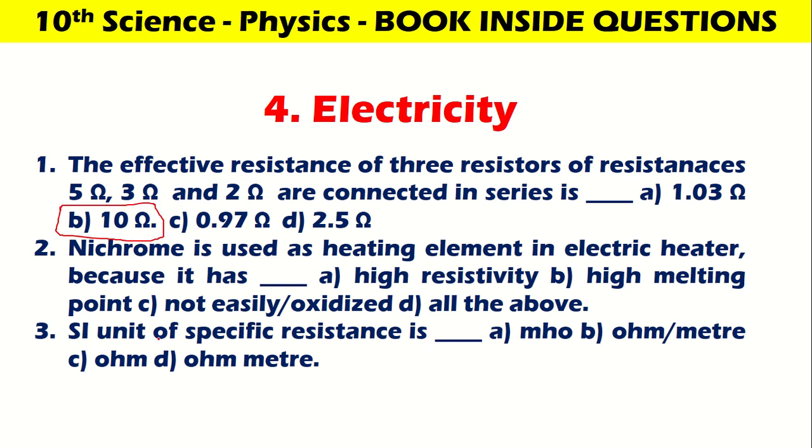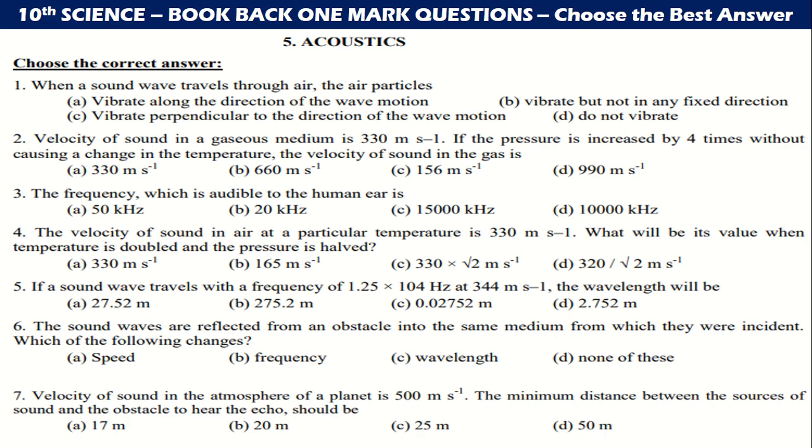Nichrome is used as heating equipment in electric heater because it has high resistivity, not easily oxidized - all of the above: high resistance, melting point, not easily oxidized. SI unit of specific resistance is ohm meter.